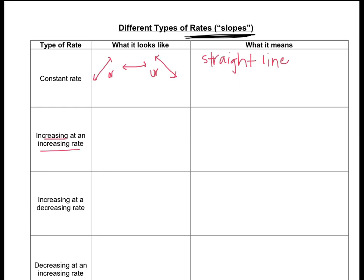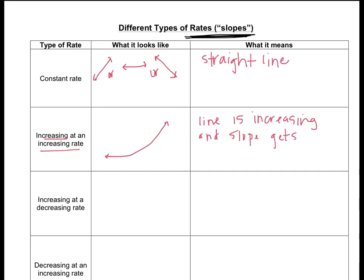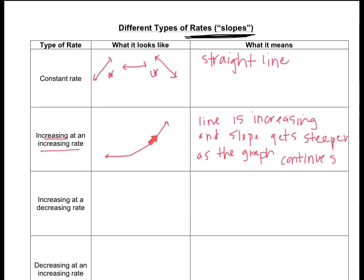Now we've got increasing at an increasing rate — and that's what the TV was doing. The picture is going to look like a curve where the line is increasing and the slope gets steeper as the graph continues. Thinking back to chapter four, these had a very small slope or even a zero slope, then we've got an increasing slope, and then it gets really, really steep.